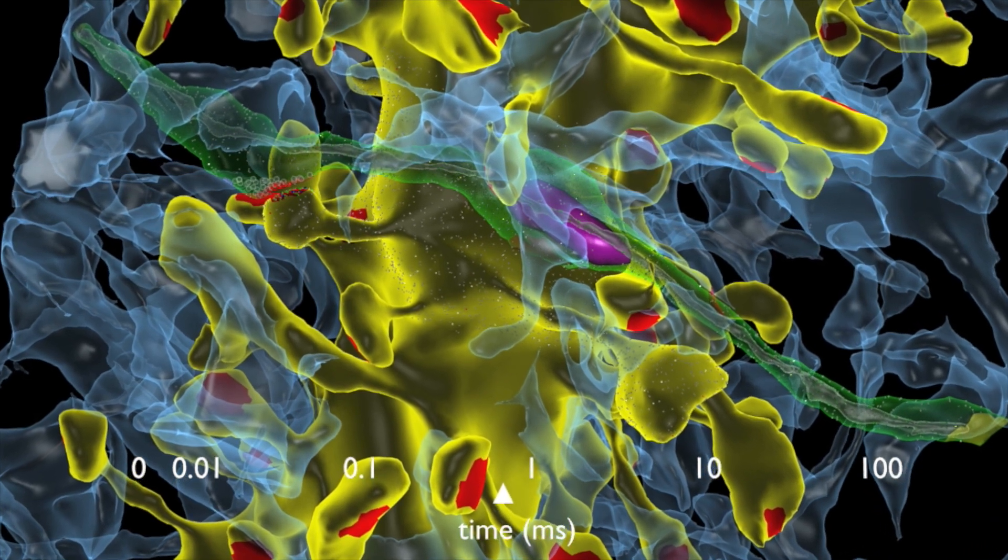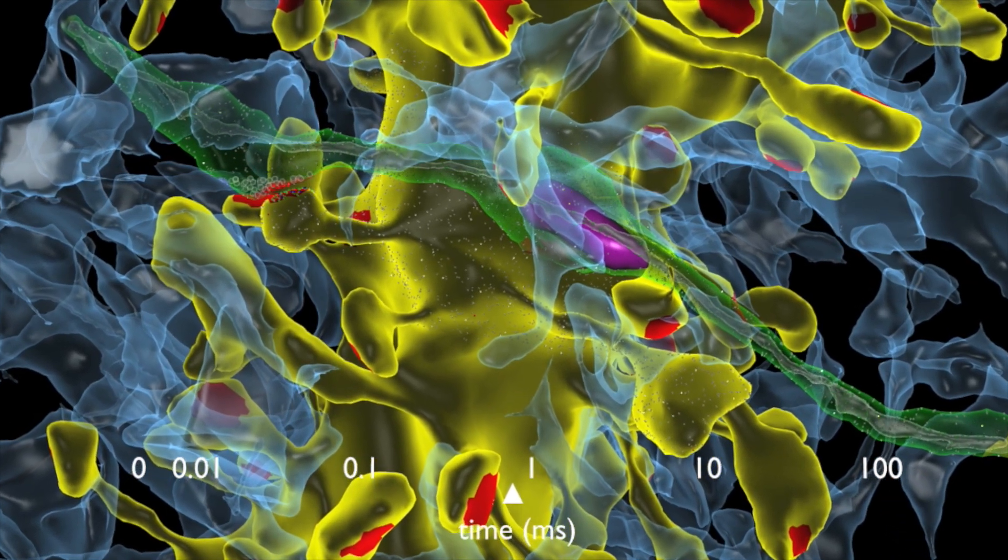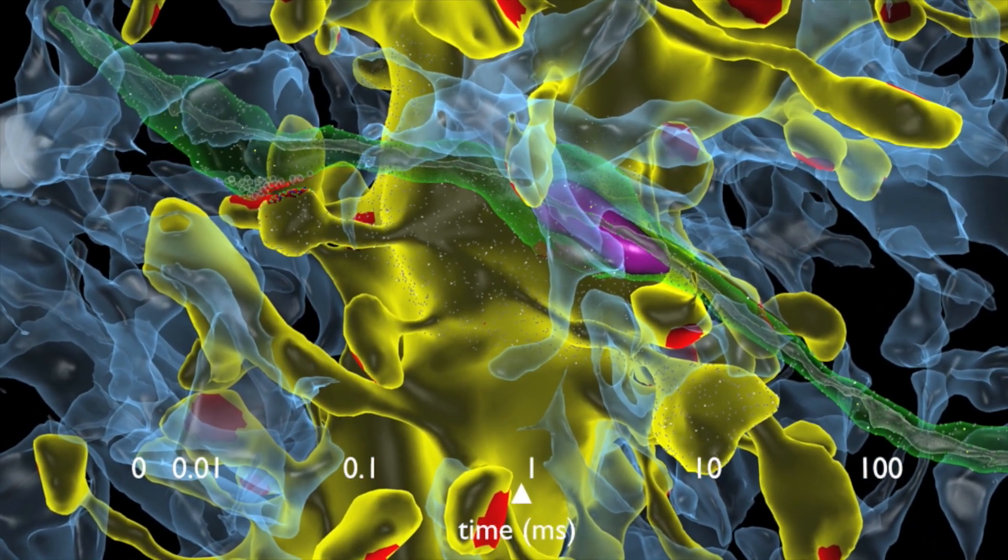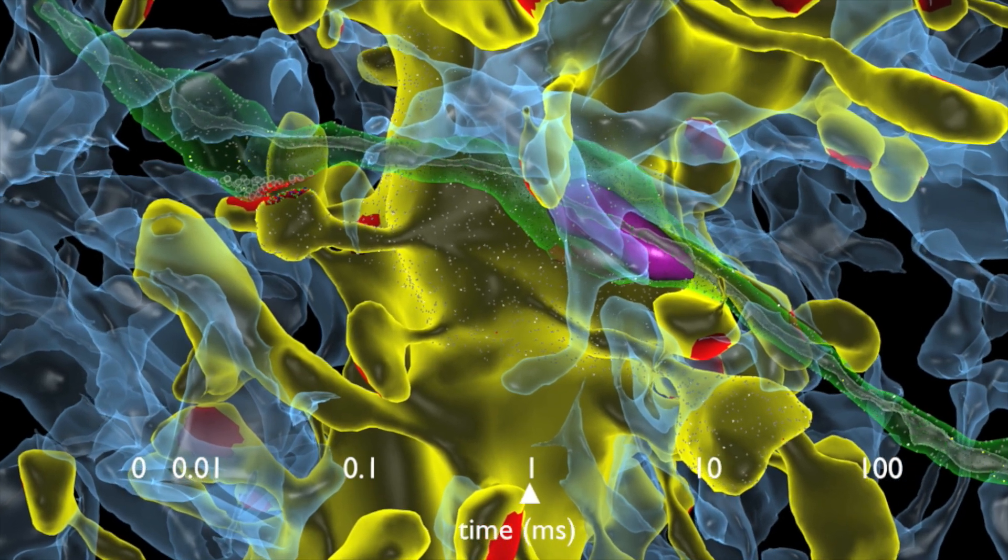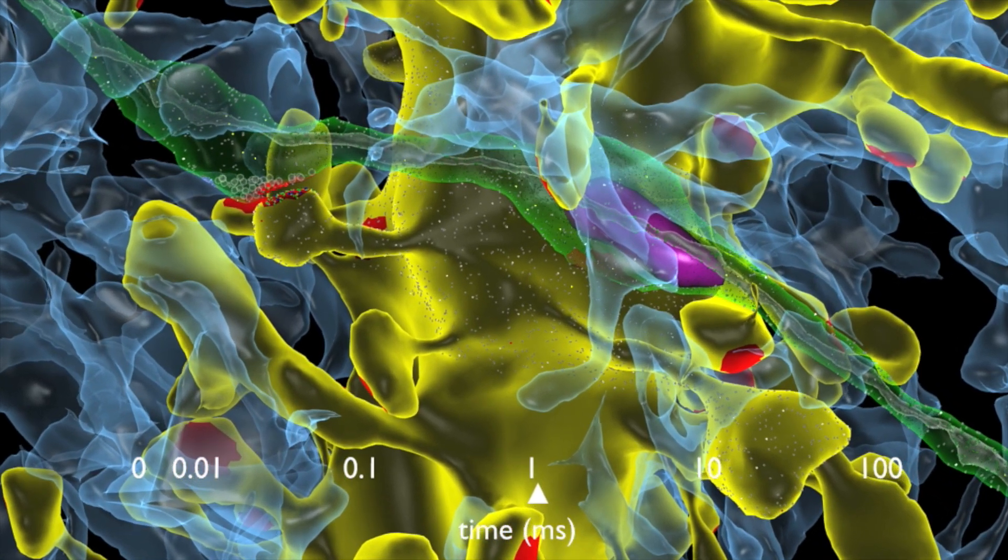Green shows a neuron's axon, which carries a signal away from the neuron to activate a second neuron. Yellow shows the second neuron's dendrite, which receives information.